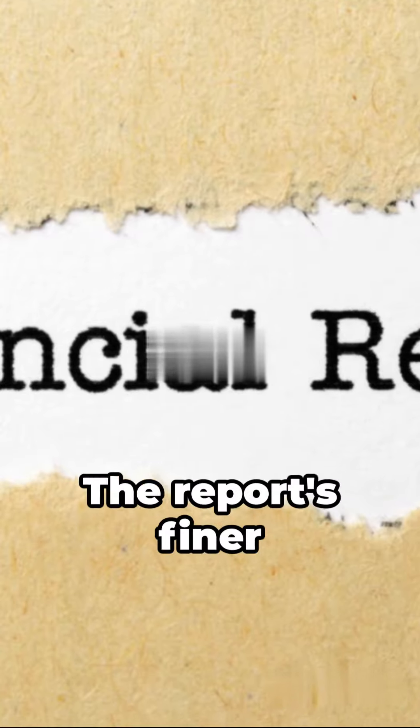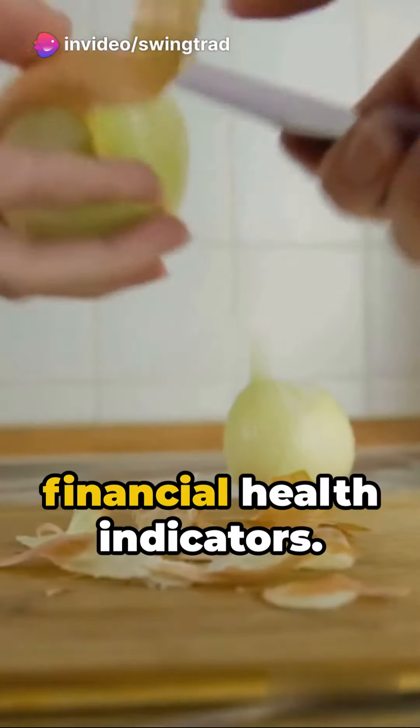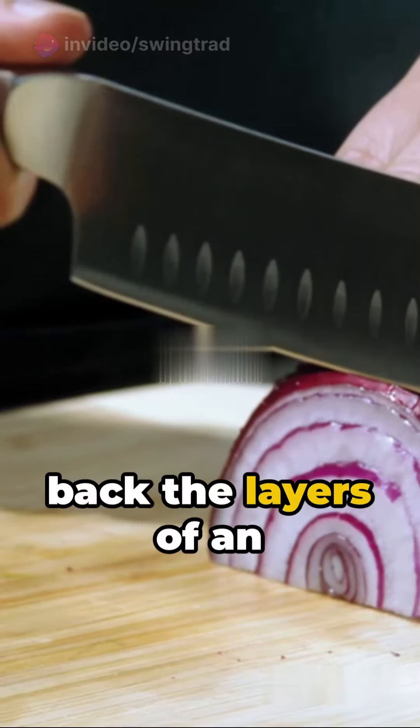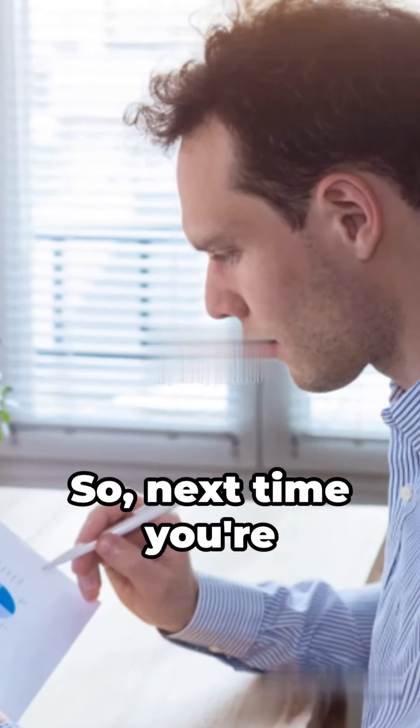But remember, it's not just about the bottom line. The report's finer details reveal the company's revenue sources, operating costs, and other financial health indicators. It's like peeling back the layers of an onion, revealing the core of a company's performance.